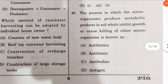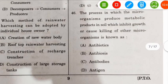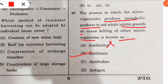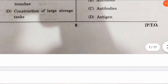Question 46: the process in which microorganisms produce metabolic products in soil that inhibit growth or cause killing of other microorganisms is known as what? Some were confused here. The correct option is antibiosis — not antibiotics. Antibiosis is the process in which organisms produce antibiotics.